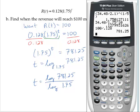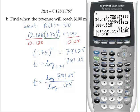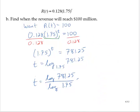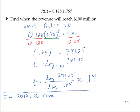Let's check that out on the calculator. Log 781.25 divided by log 1.75 is 11.9 approximately. Now remember that t was the number of years since 2000. So 11.9 is about 12, so that would mean the year 2012. Conclusion. In 2012, the revenue will reach $100 million.